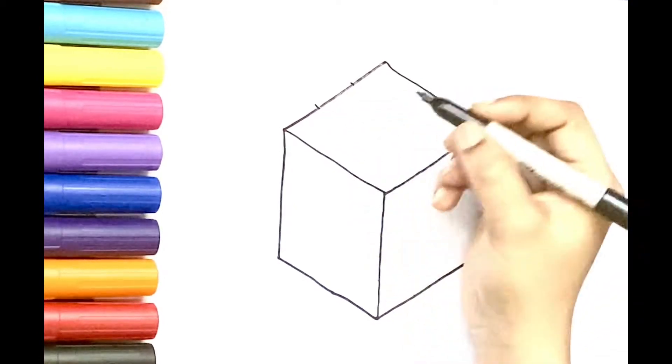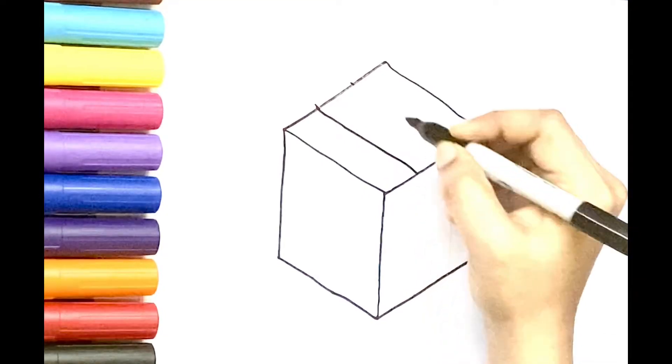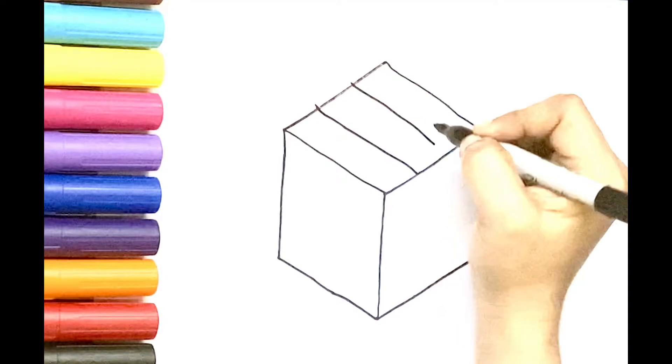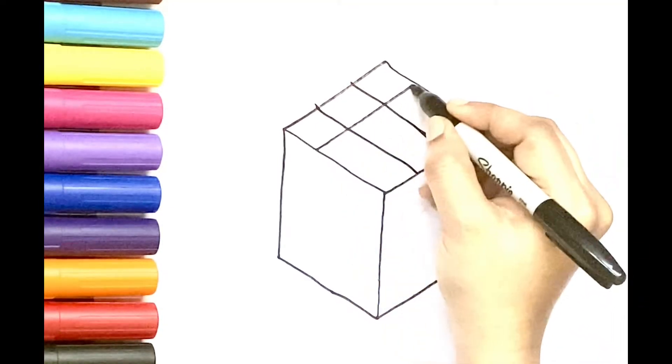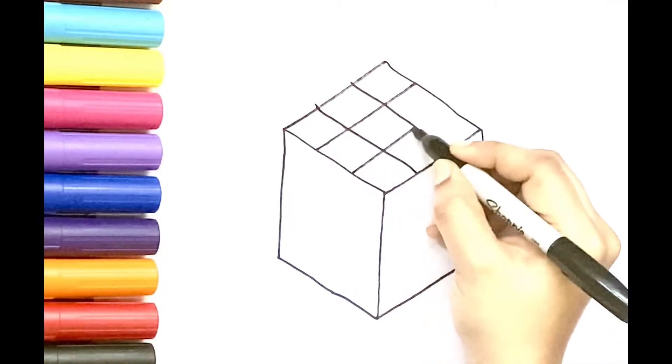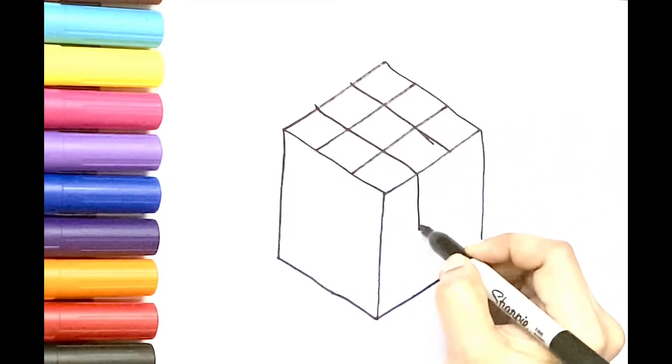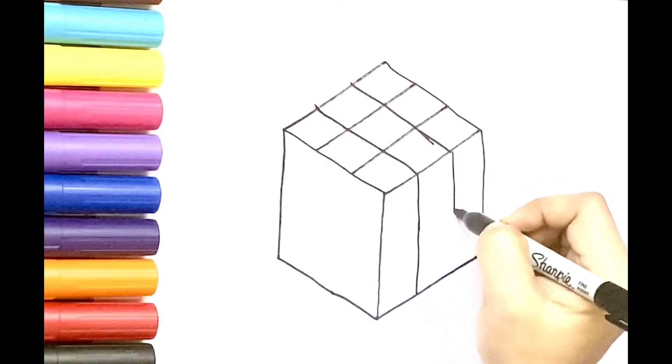Now we have three sides of the cube. For a Rubik's cube, each side should have nine small squares. For that, first draw two parallel lines like this and another two parallel lines like this. Repeat the same steps for the other two sides.